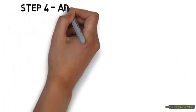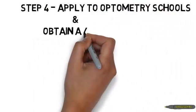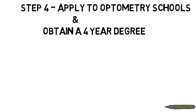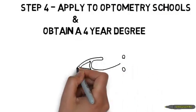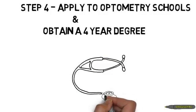Step four, apply to schools with an accredited optometry program and complete a four-year degree. Most students will complete a part-time residency program or start a full-time one immediately upon graduating.